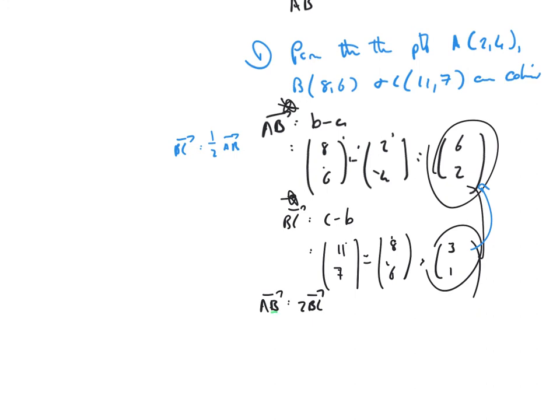Now, what I would also say then is we can clearly see that there is a common point. So, AB equals 2BC, and there is a common point B. Therefore, points lie on a straight line. And collinearity exists, and it's important to communicate your thoughts at the end.